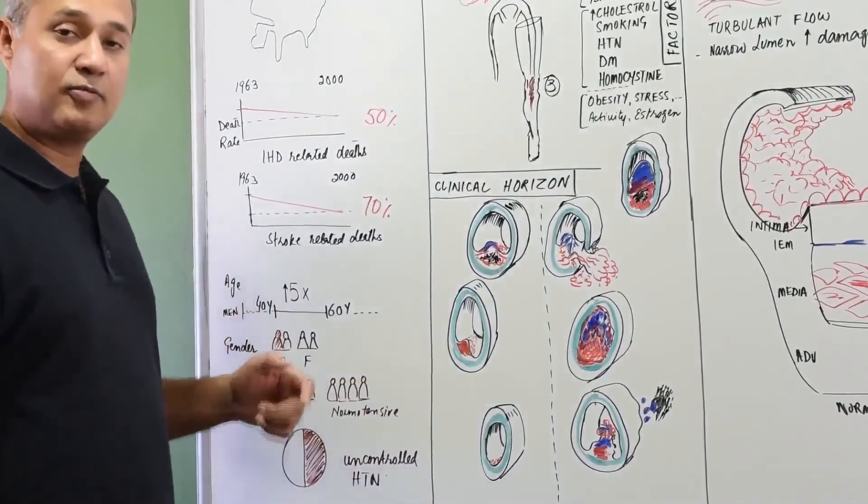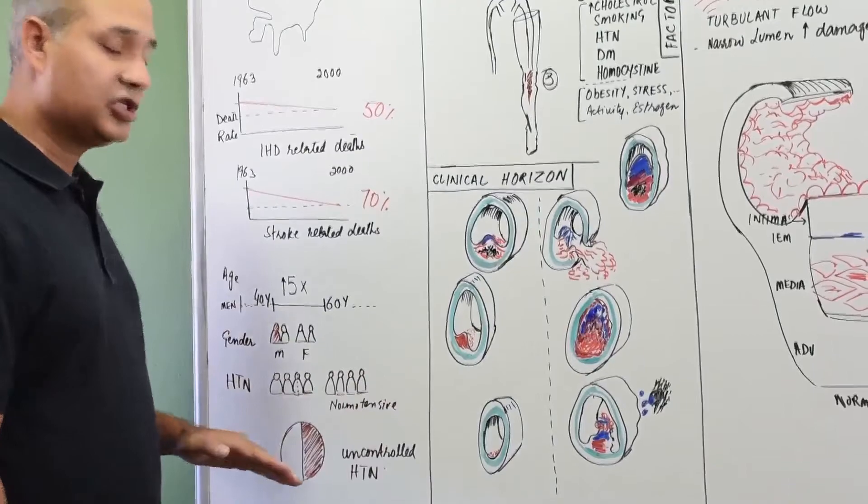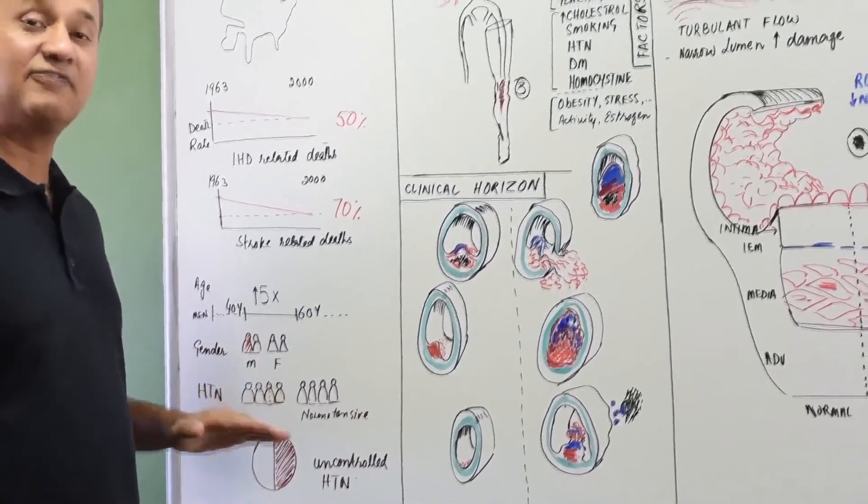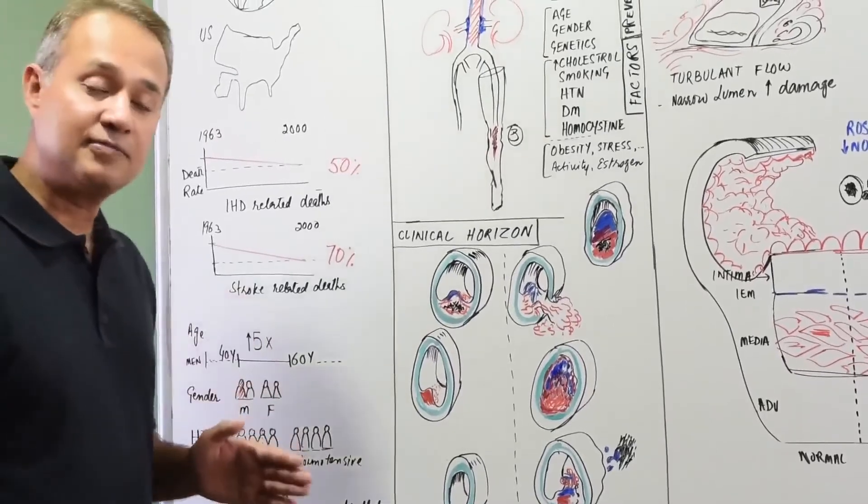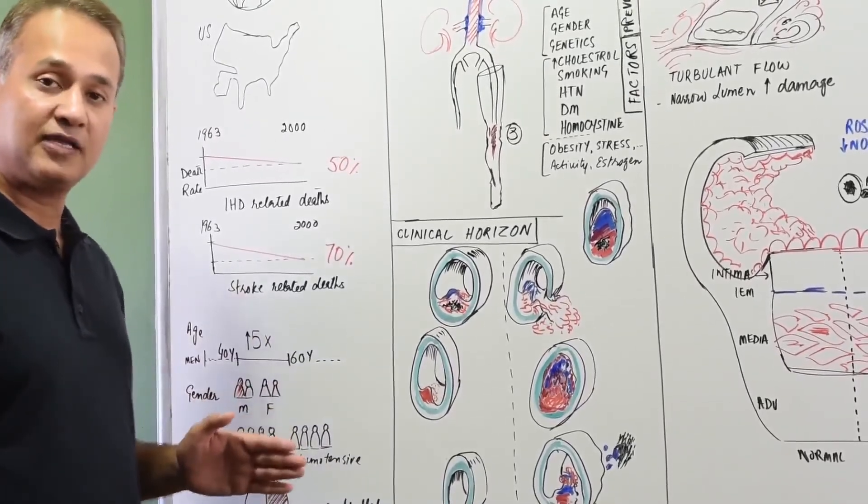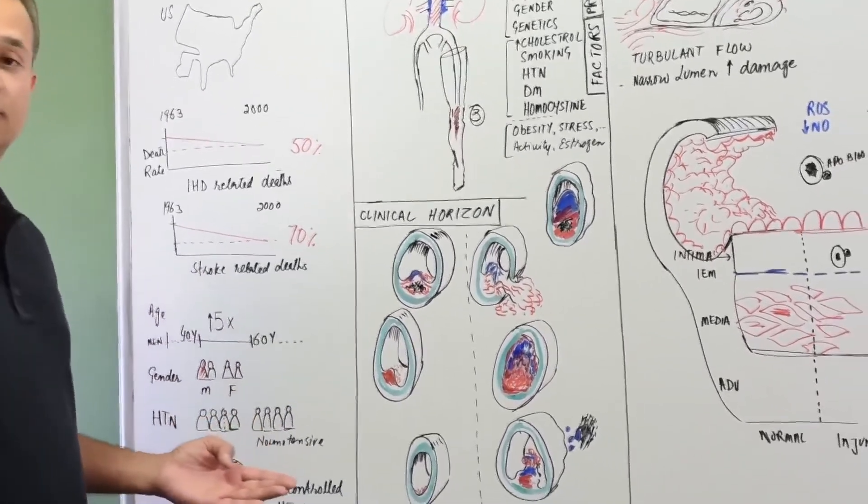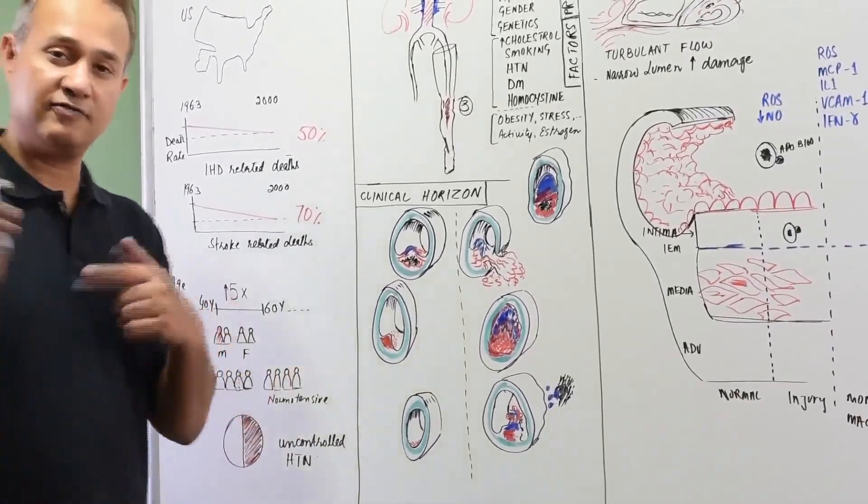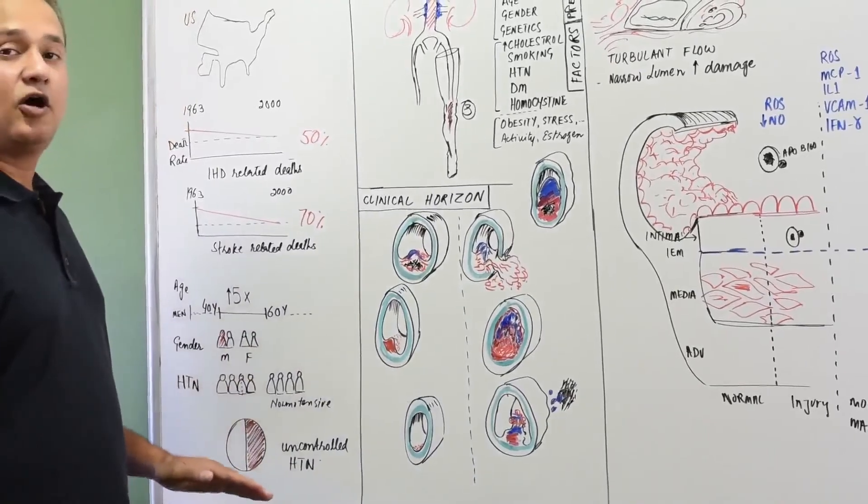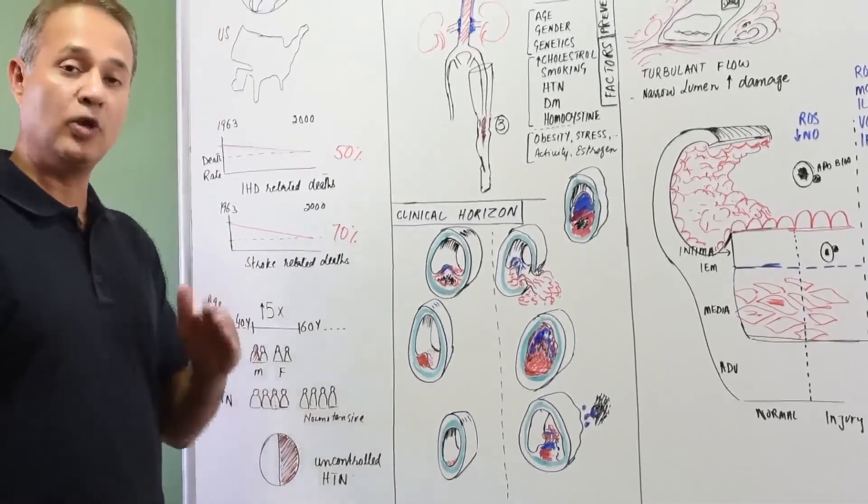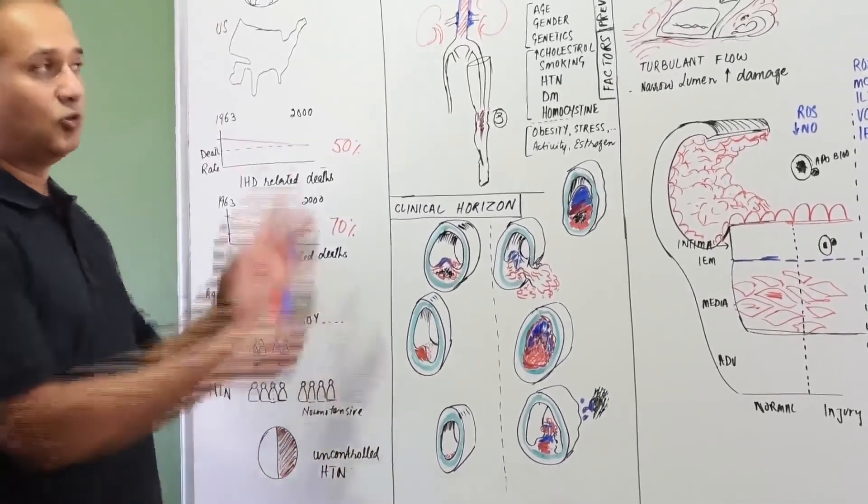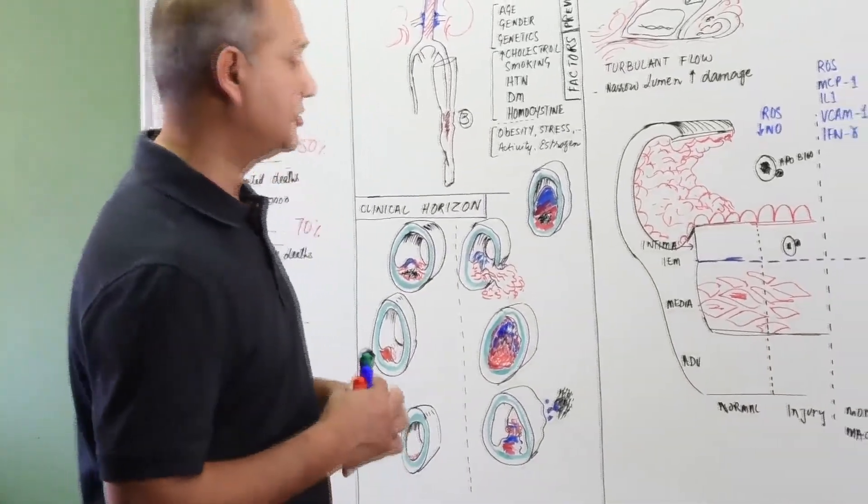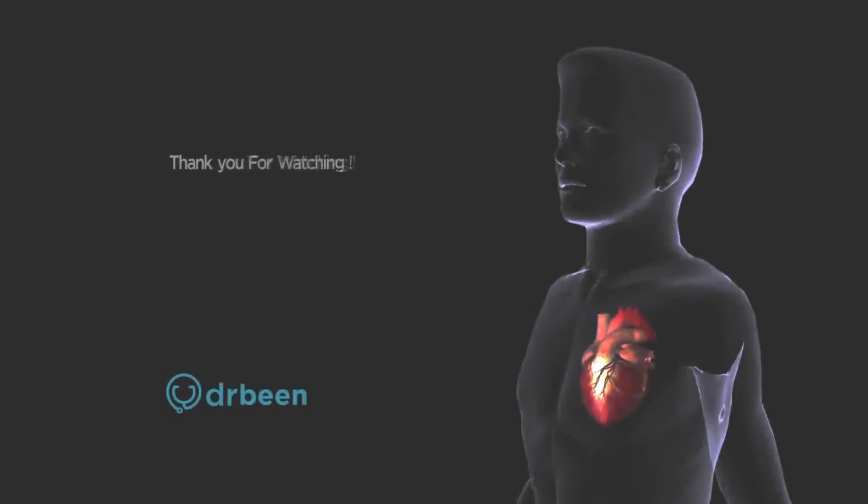Gender, of course, males are more than female. Hypertension, about 60% of hypertensive patients have a greater probability of developing atherosclerosis compared to normotensive. And uncontrolled hypertensives, about 50%, 50% of the uncontrolled hypertensive will die of ischemic heart diseases which are a contribution of atherosclerosis.